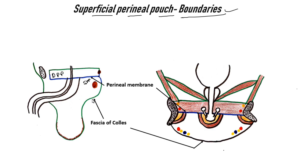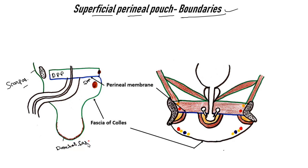If you trace Colles' fascia anteriorly, in the upper part this is the Scarpa's fascia, which continues as the dartos fascia or dartos muscle, and this fascia continues as the fascia of Colles.